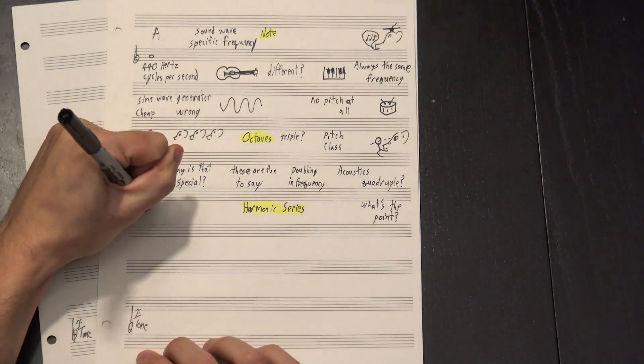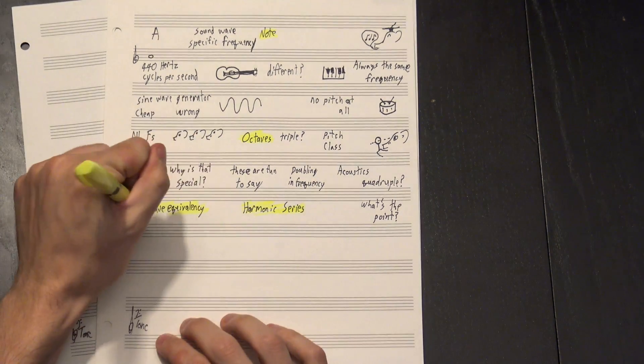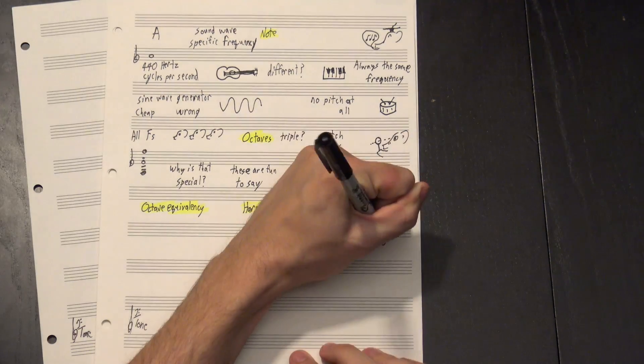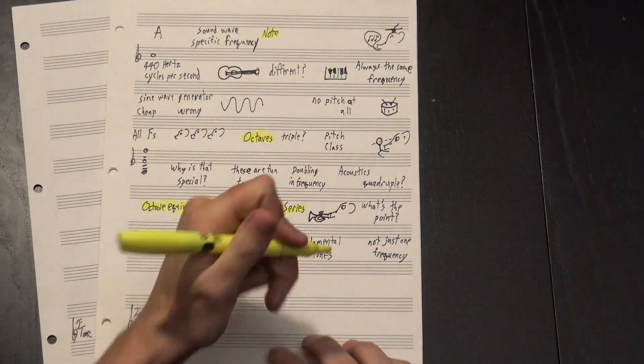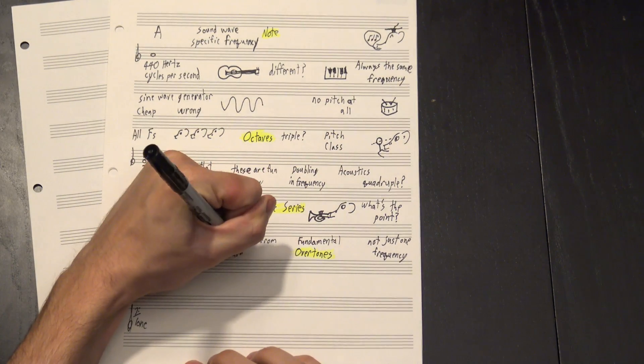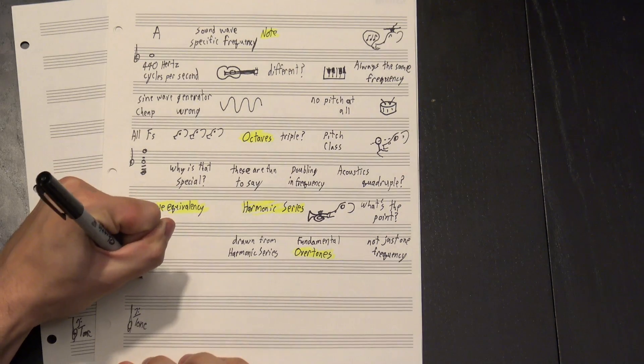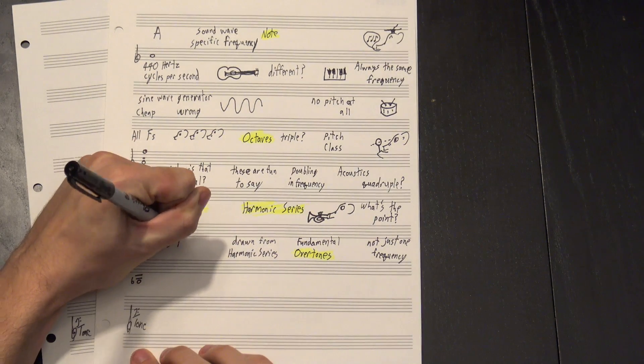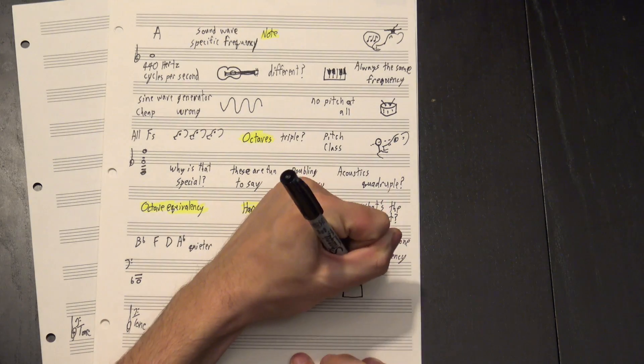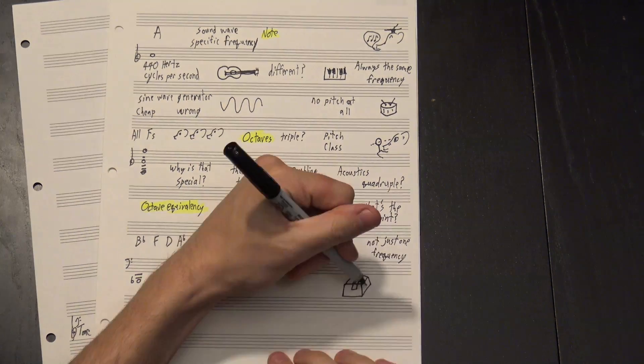So then what's the point? Well, for starters, it helps explain octave equivalency. When you play a note on an instrument, you're not just playing one frequency. You're playing the fundamental, but you're also creating what are called overtones, and those overtones are drawn from the harmonic series. When I play this, you're hearing the low Bb, but also shades of F, D, and Ab. They're quieter, and your brain packages it all together into one note, but they're definitely there.